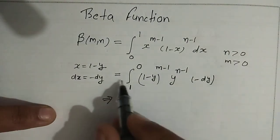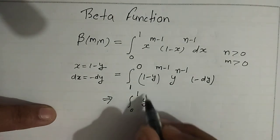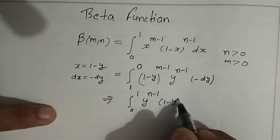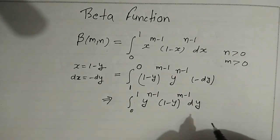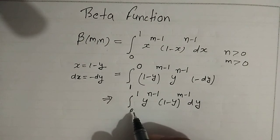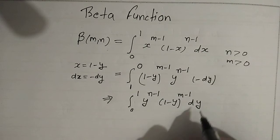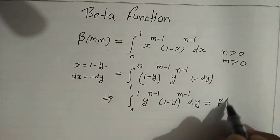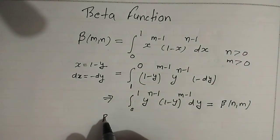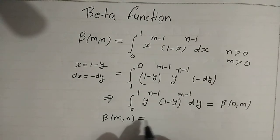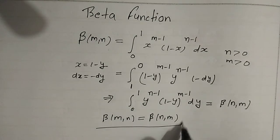If we change the limits, the minus sign cancels, so the integral becomes 0 to 1 of y^(n-1) times (1-y)^(m-1) dy. This is nothing but beta(n, m). So we get beta(m, n) equal to beta(n, m) — the beta function is symmetric.